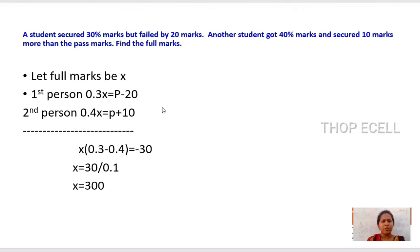Here is problem number 1. A student secured 30% marks but failed by 20 marks. Another student got 40% marks and secured 10 marks more than the pass mark. Find the full mark.